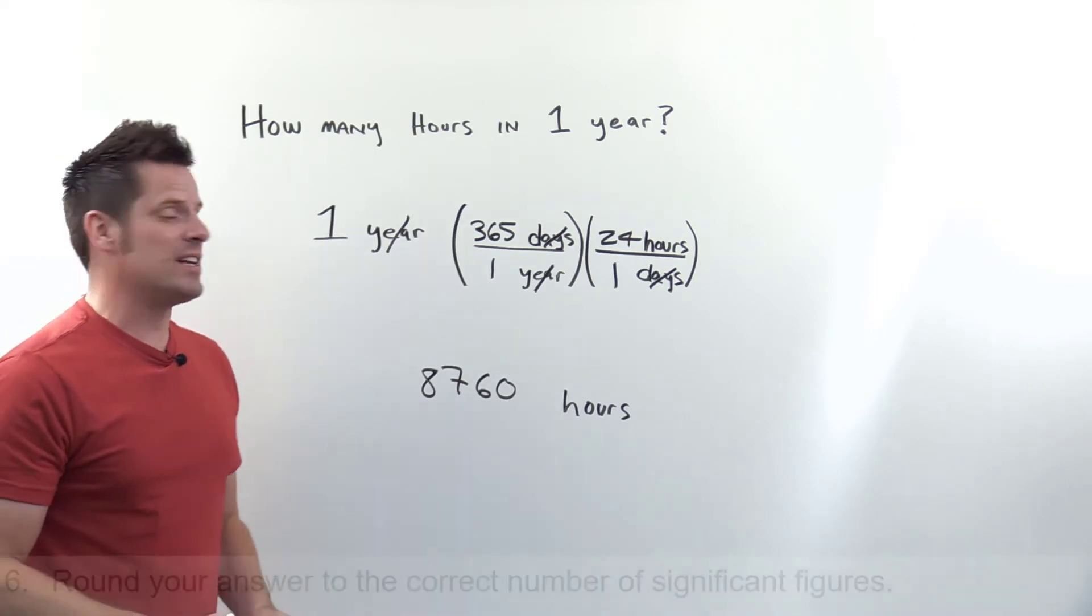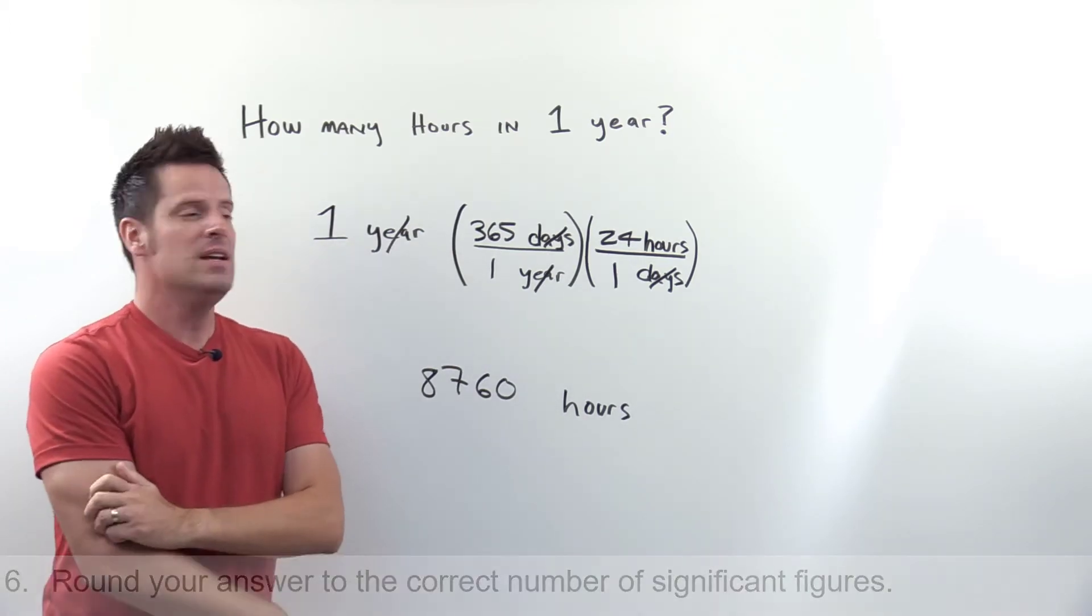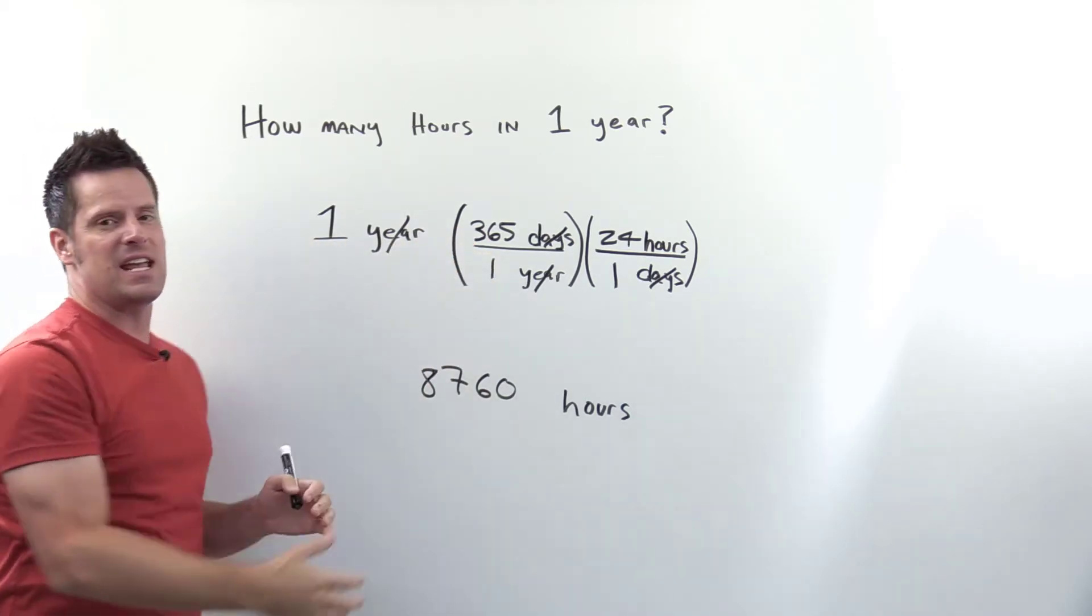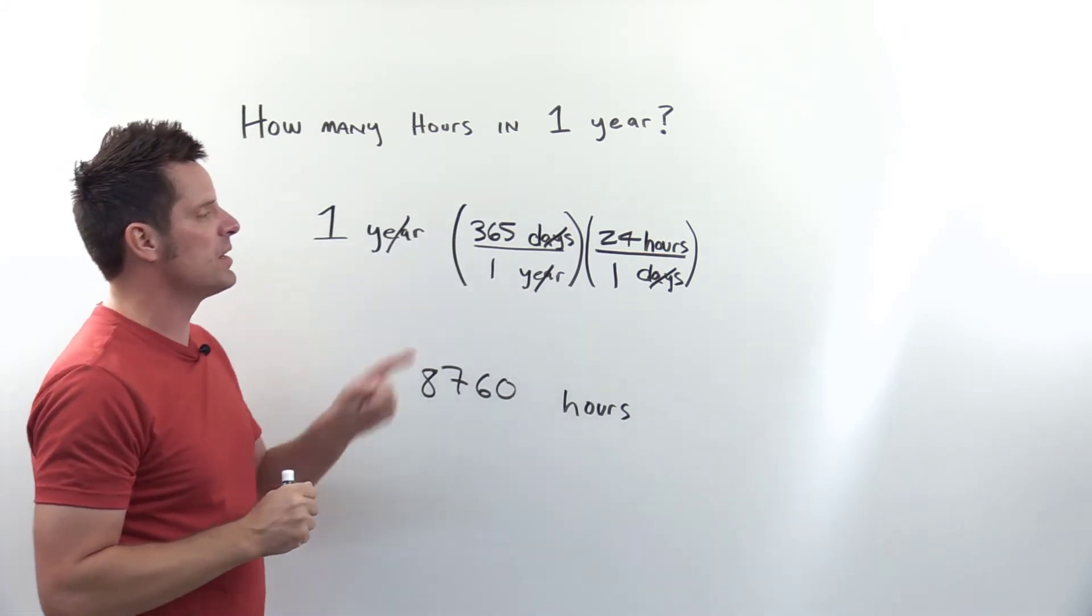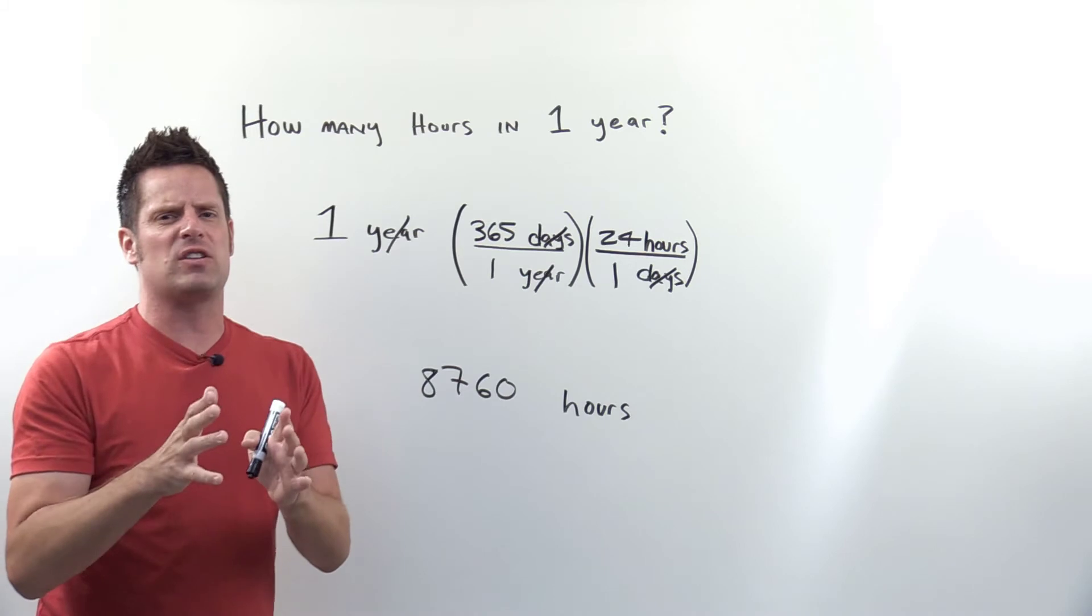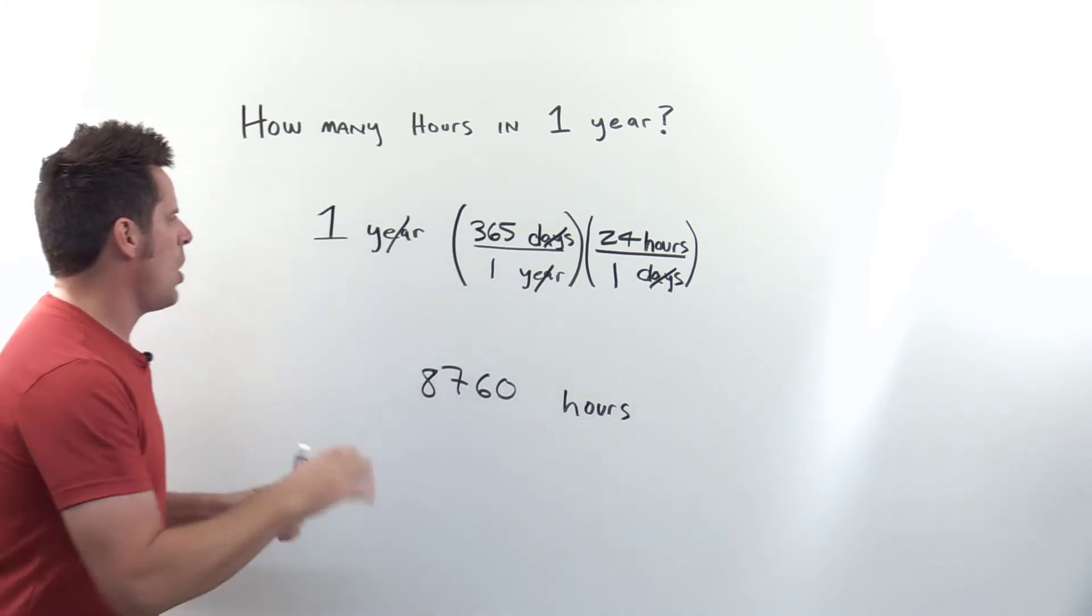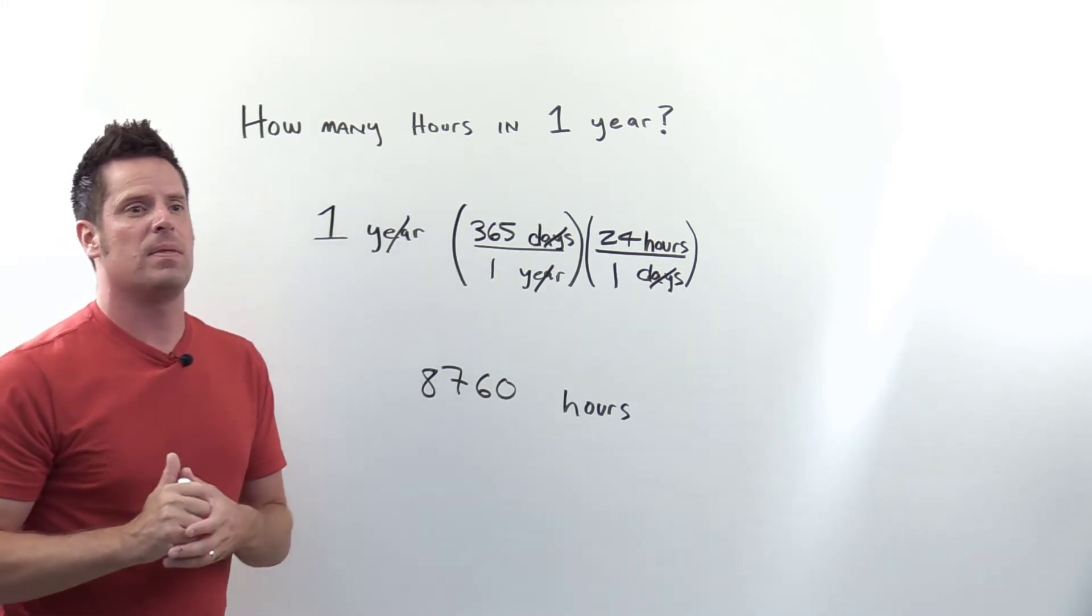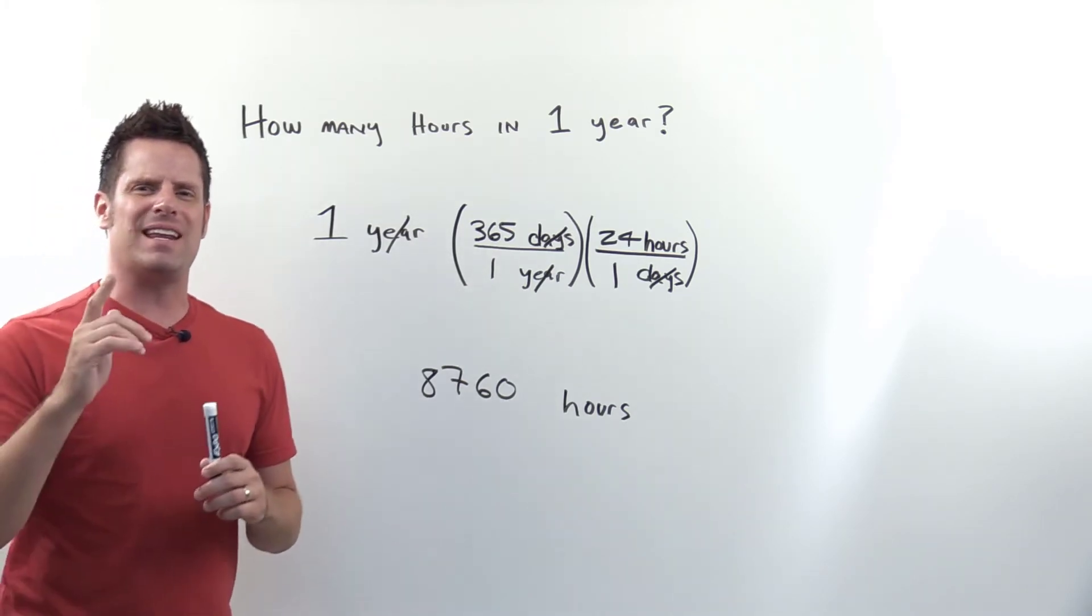Step six: be sure to round your final answer according to significant figure rules. Because we're multiplying and dividing, we need to round our final answer to have the same number of significant figures as whichever term has the smallest number. This can get confusing because the number of significant figures a term has reflects how accurate that number is. Are we talking about exactly one year, or one year that was measured and rounded?